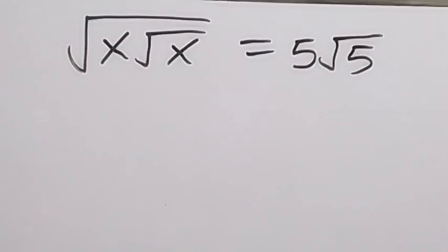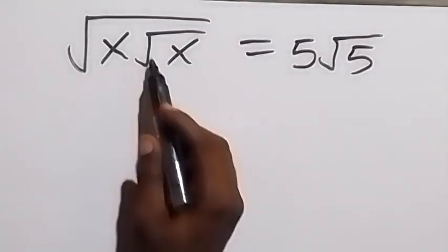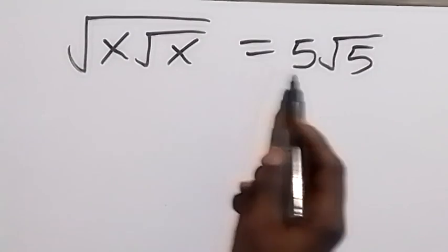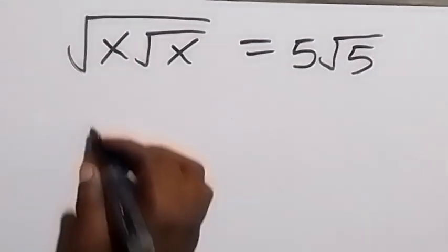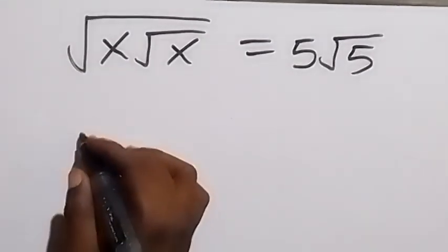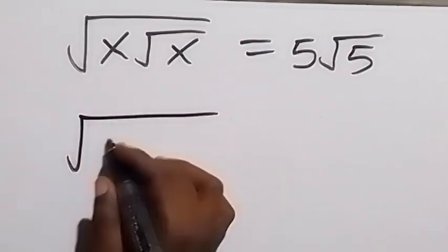Hello, you are welcome. How to simplify this nice algebra problem: we have square root of x root x equals to 5 root 5. From here we can take the square on both sides.